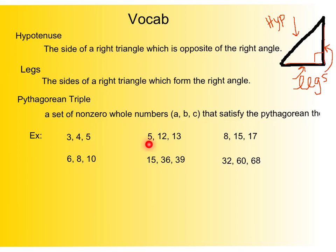Same with 5, 12, and 13, or 8, 15, 17. Those are three examples of Pythagorean triples.